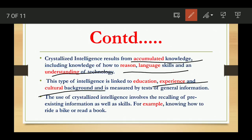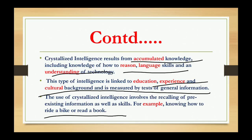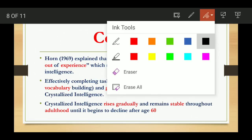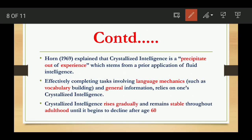This type of intelligence is linked with education, experience, and cultural background, and can be measured by tests of general information. Horn in 1969 used the phrase that 'Crystallized Intelligence precipitates out of experience,' so experience plays a very important role here.